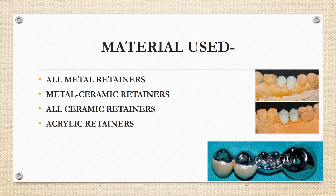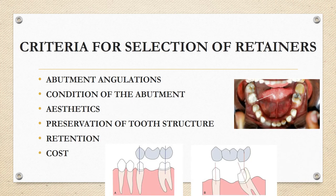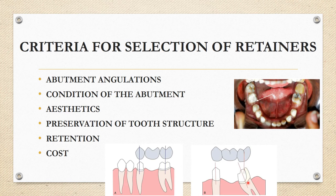The criteria for selection of retainers depend on five or six factors: abutment angulation, condition of the abutments, aesthetics, preservation of tooth structure, retention, and cost. For abutment angulation — when abutments are parallel to each other, full veneer retainers can be used as a single path of insertion is obtained. In this case the retainers are full veneer because there is a single path of insertion.